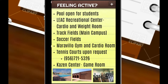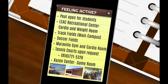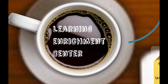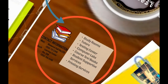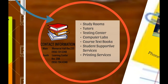The main campus also has a tennis court found behind the LIAC. The game room in the main campus allows students to relax during a class break, and it has pool tables, ping-pong tables, foosball, Xbox, and air hockey. The Learning Enrichment Center offers study rooms, tutors, testing centers, computer labs, course textbooks, student supportive services, and printing services. The contact for the main campus is Memorial Hall room 235, number 956-721-5348. For the South Campus, it is the Learning Center room 208, number 794-4348.